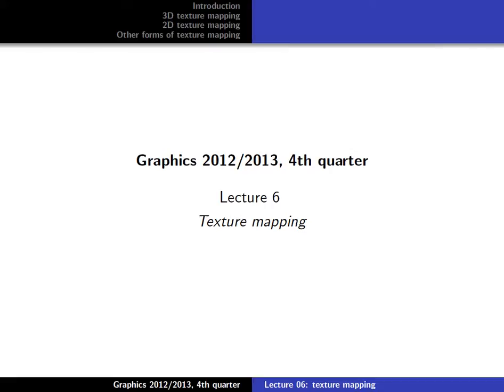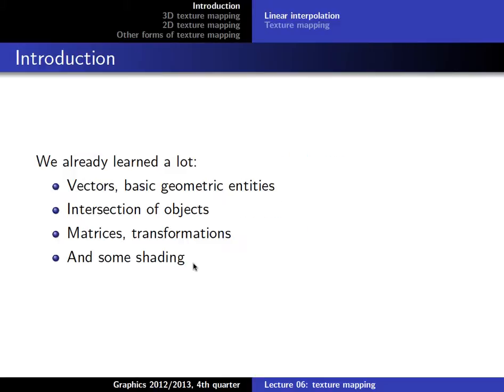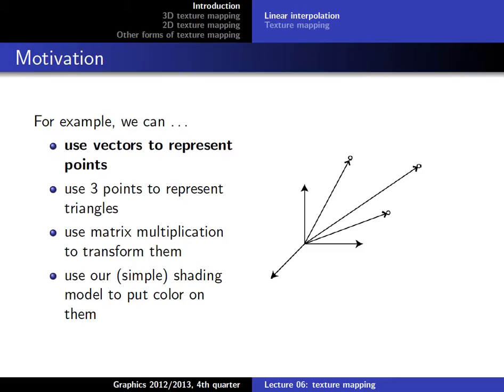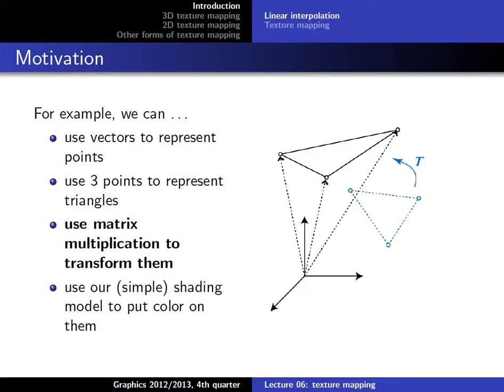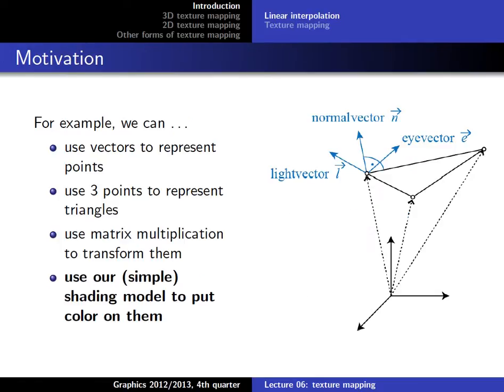Welcome everyone. Today we are going to skip ahead a little bit in the book and talk about texture mapping, because this is something you need for the practicals. We have already covered most of the basic chapters — we started by talking about vectors, how we can use them as points to represent geometric objects such as triangles. Last time we talked about matrix manipulation to transform those objects, and at the very beginning we introduced a very simple shading model.